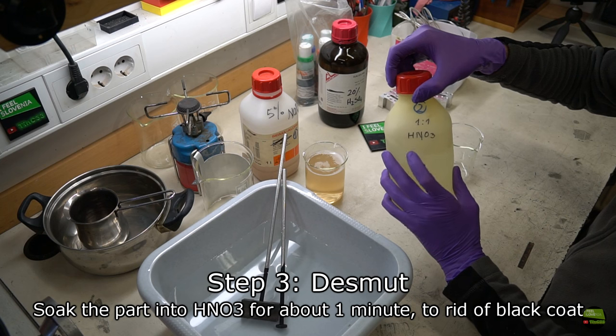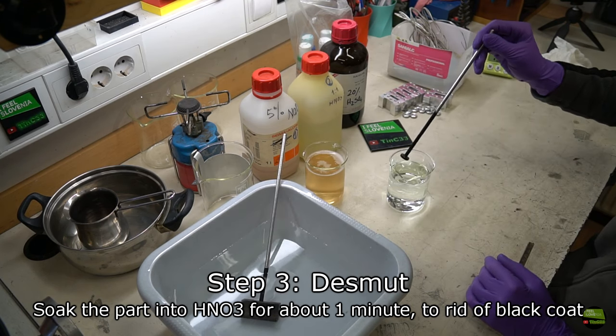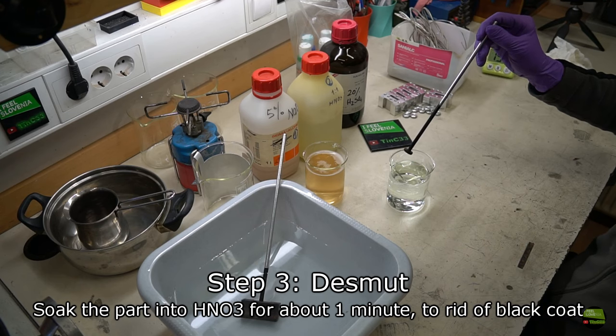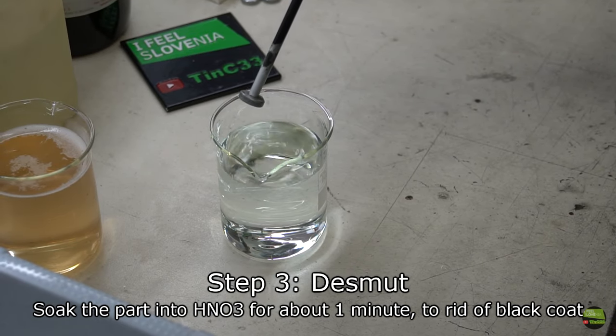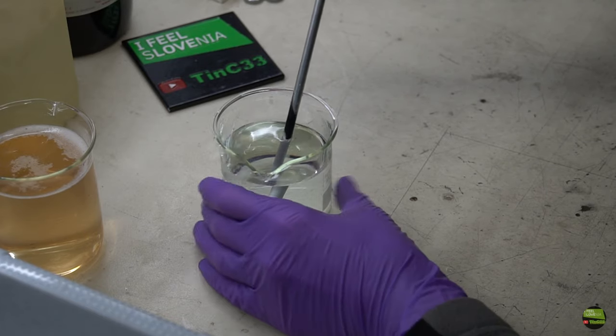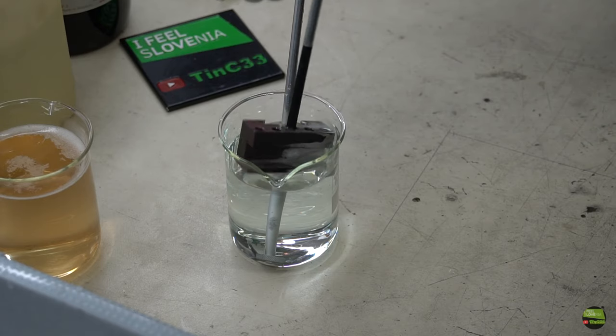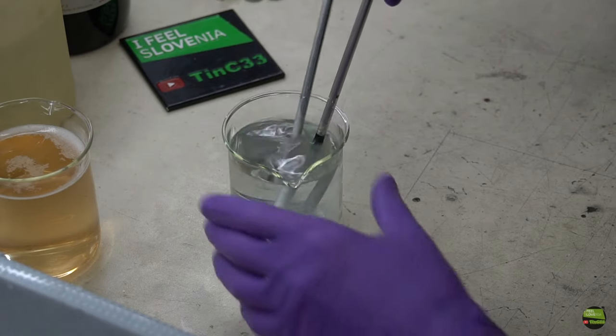Now it's time for step two. Prepare the container with nitric acid and soak the part into it. But make sure you rinse them with water. Never put the part directly from one to another acid. Every time rinse the part with water. Nitric acid will remove the black film on the part instantly, but you can leave it soaked for a minute. Then again rinse the part with water.